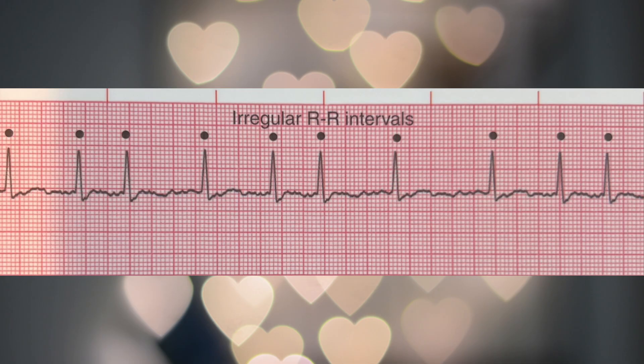The answer is atrial fibrillation, also known as AFib. The rhythm is irregular. It is an uncoordinated atrial electrical activation with twitching of the atrial muscles. Keep in mind, AFib is a chronic arrhythmia that is related to heart disease. Some causes can be associated with chronic hypertension, lung disease, or heart failure.